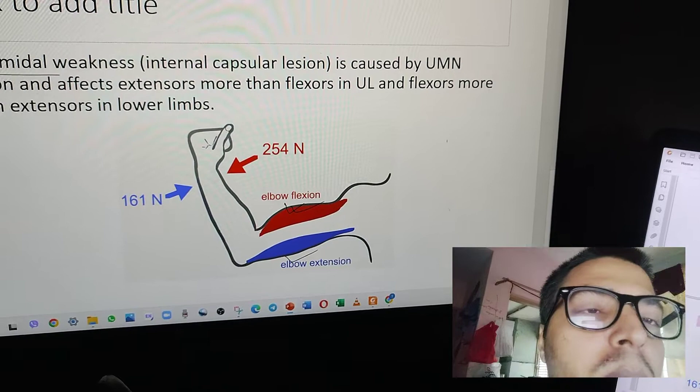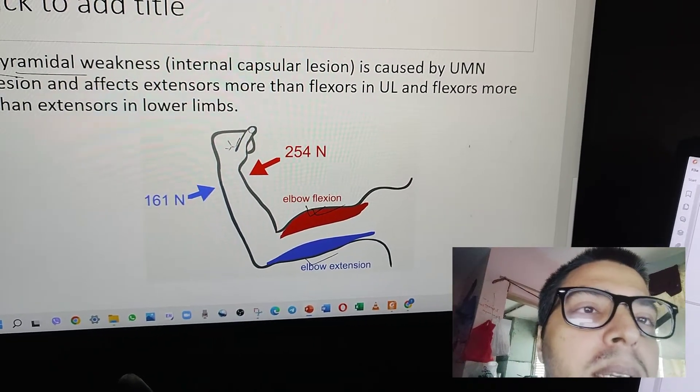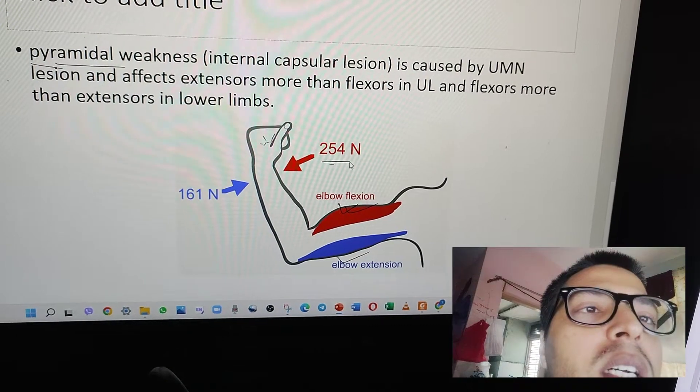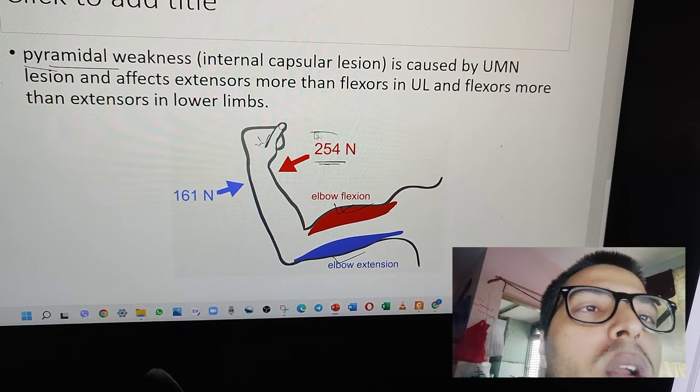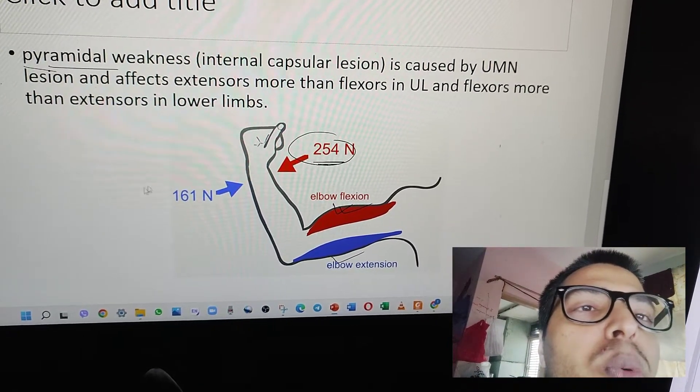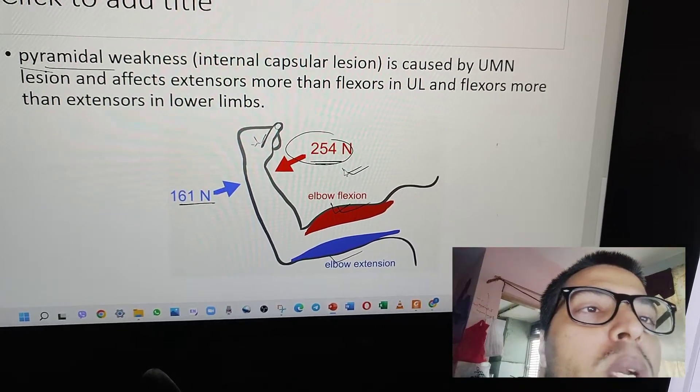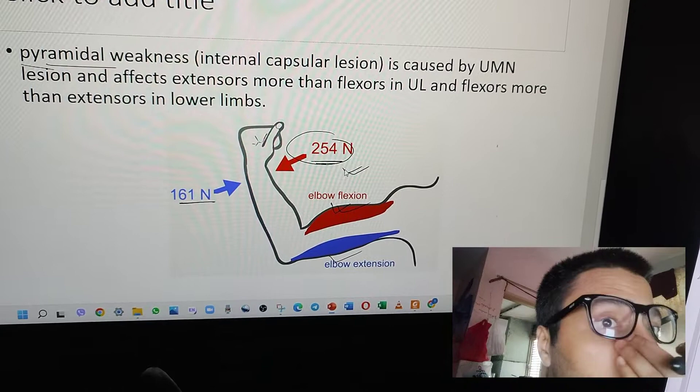Here you can see the force required to break a fully flexed elbow is about 254 N, and it is lower on the extensor at 161 N. From this figure, you can see that flexors are more powerful in upper limbs.